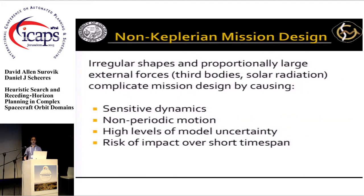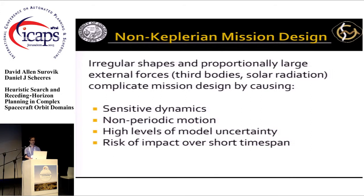However, all of that goes out the window when you're orbiting an asteroid. The irregular shape, as well as proportionally large forces from third bodies and solar radiation pressure — which become large due to the low mass of the asteroid — all cause complications by making the dynamics far more sensitive, the motion very non-periodic, and combined with the fact that you simply don't know that much about these systems before you get there and their shape can be complicated, there's lots of model uncertainty.